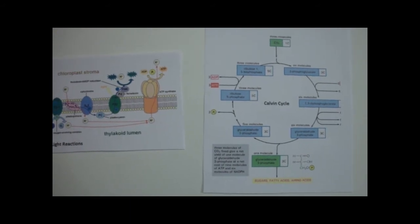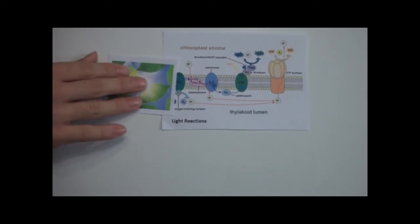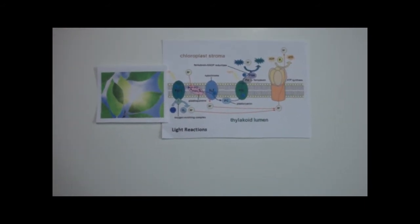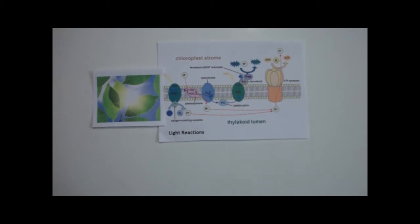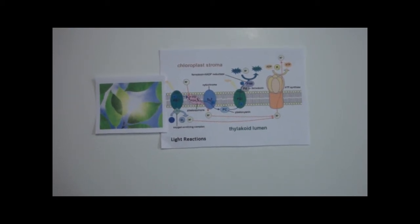Light reactions, as implied by their name, require energy from light in order to function. They convert solar energy into chemical energy through complexes known as photosystems. Light reactions take place in the chloroplast thylakoids.